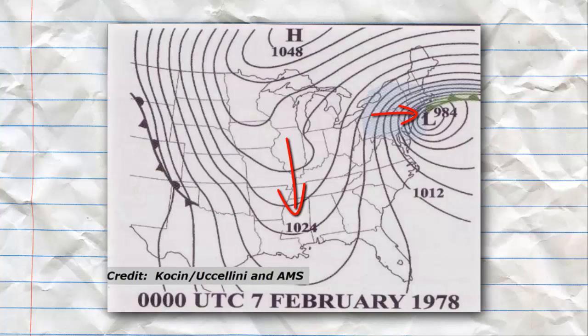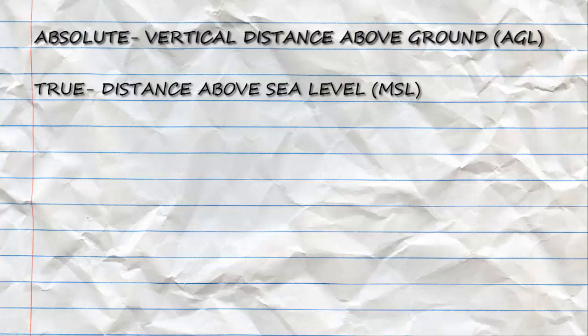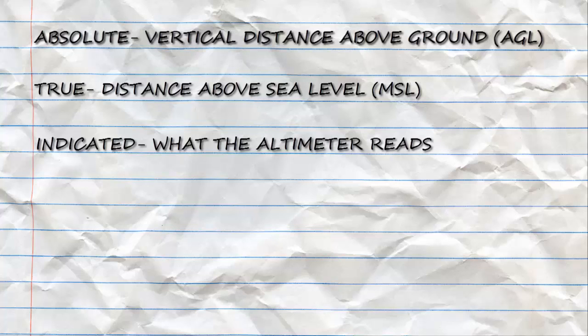As a pilot we have five different types of altitude that we need to be concerned with. The first is absolute altitude, the altitude of an aircraft above the ground, AGL. True altitude, the actual altitude of an aircraft above mean sea level. Indicated altitude, the altitude measured by your altimeter.